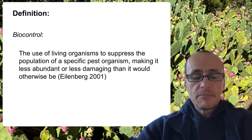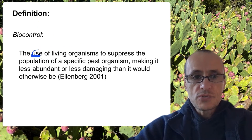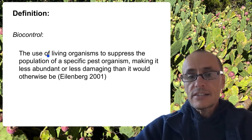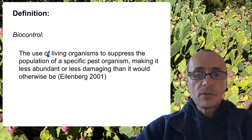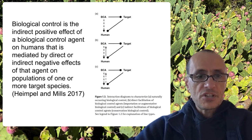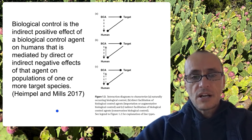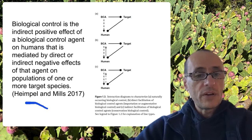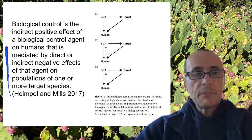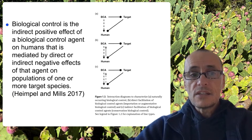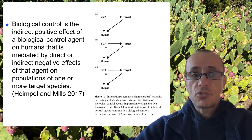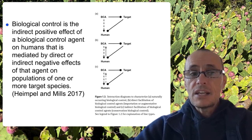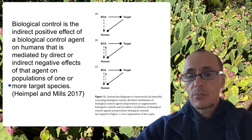It has a component having to do with an action — it's the use of — but it also has some limitations. George Heupel and Nick Mills, in their recent book, suggested that a better definition might involve something more focused on the interactions between organisms rather than intent or whether the organisms are living or not. They propose that biological control is the indirect positive effect of a biological control agent on humans, mediated by either direct or indirect negative effects of that agent on the population of one or more of the target species.